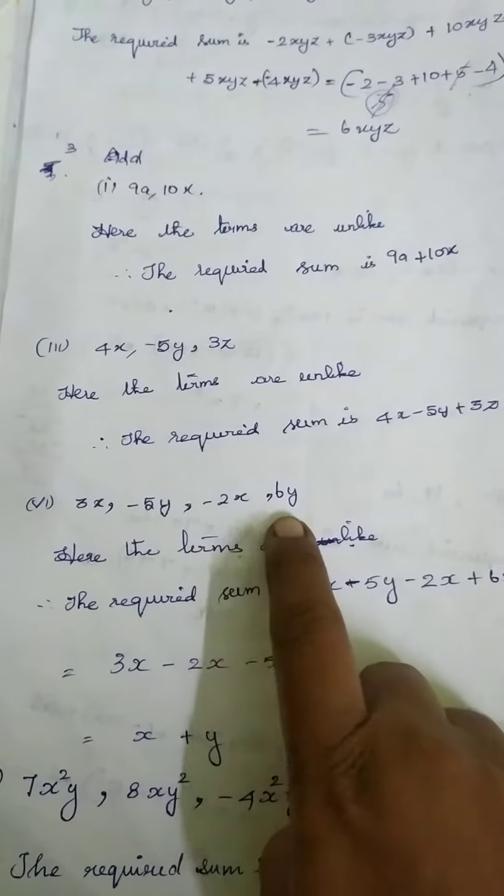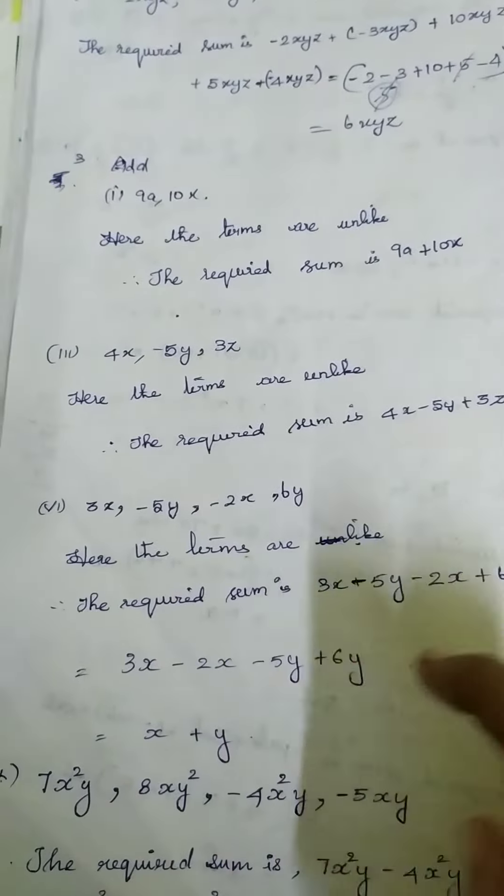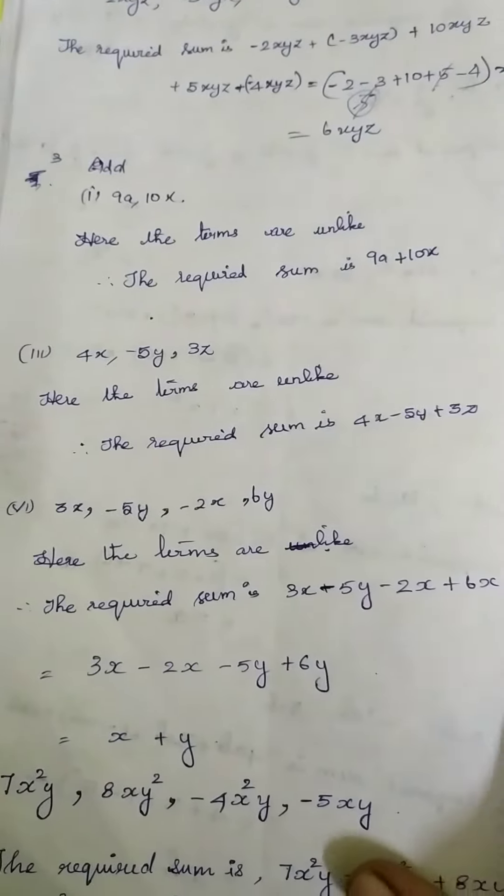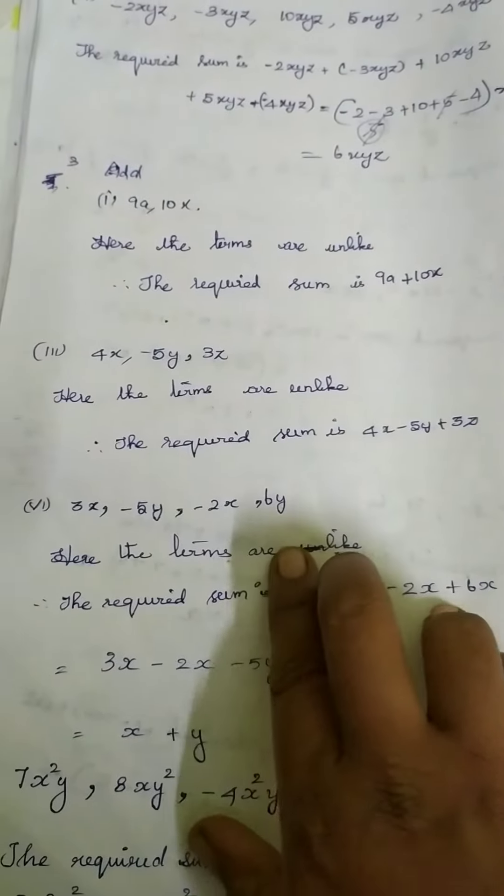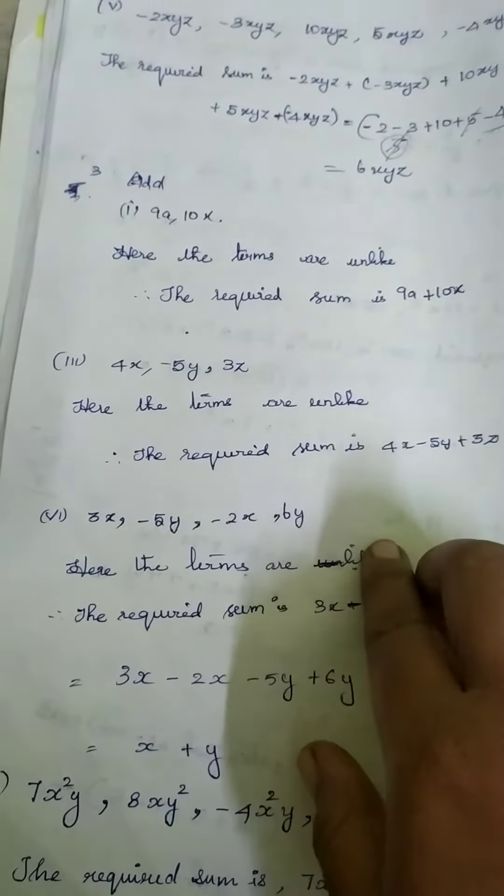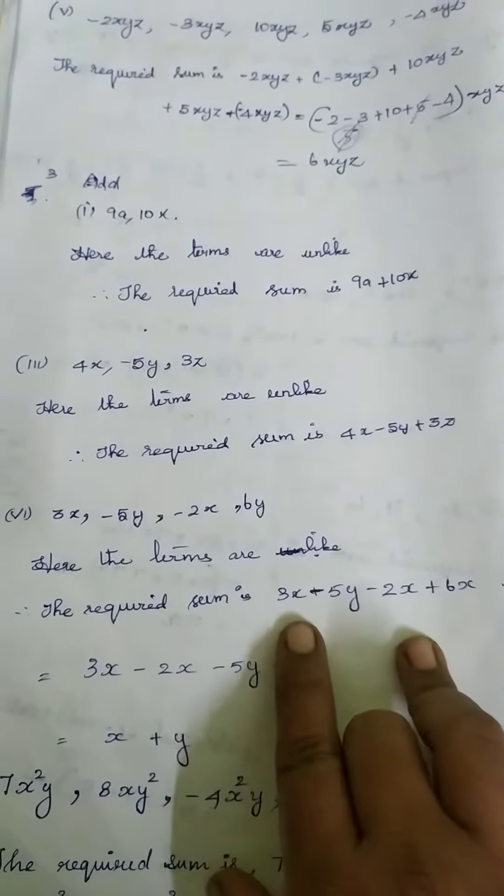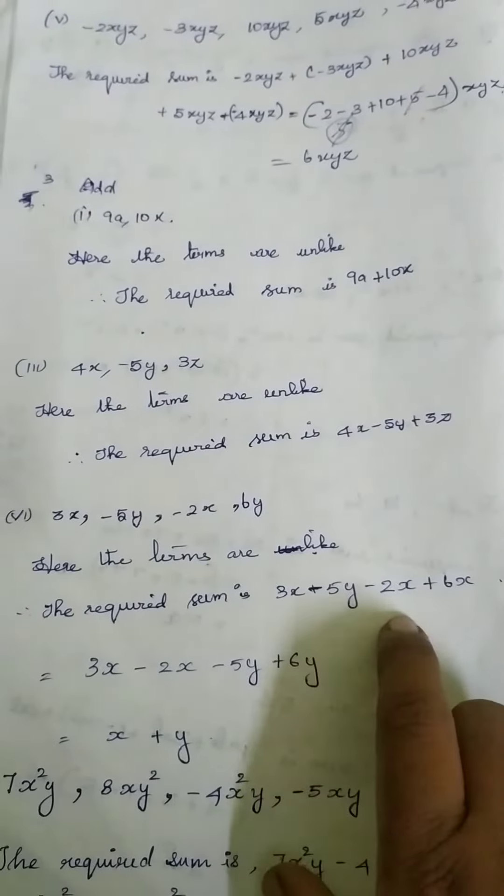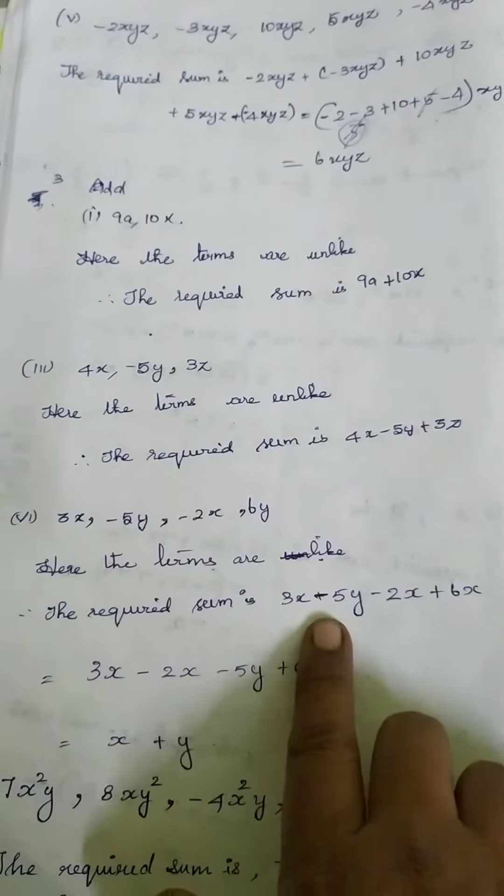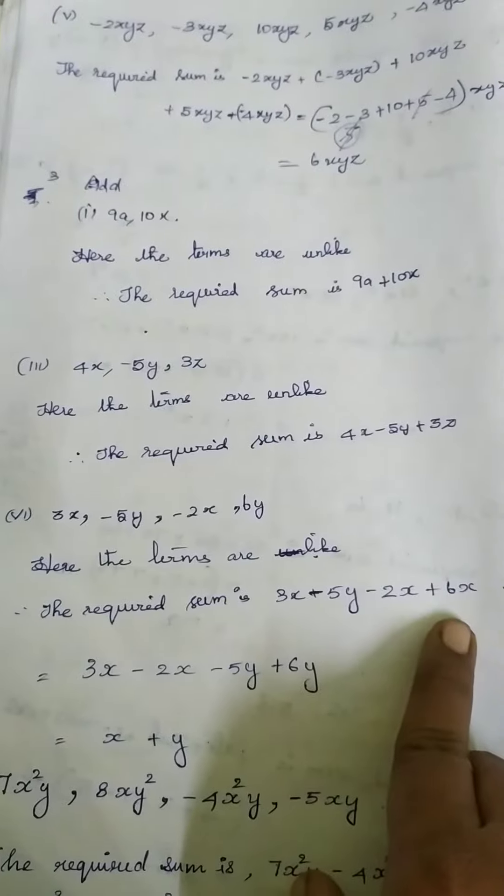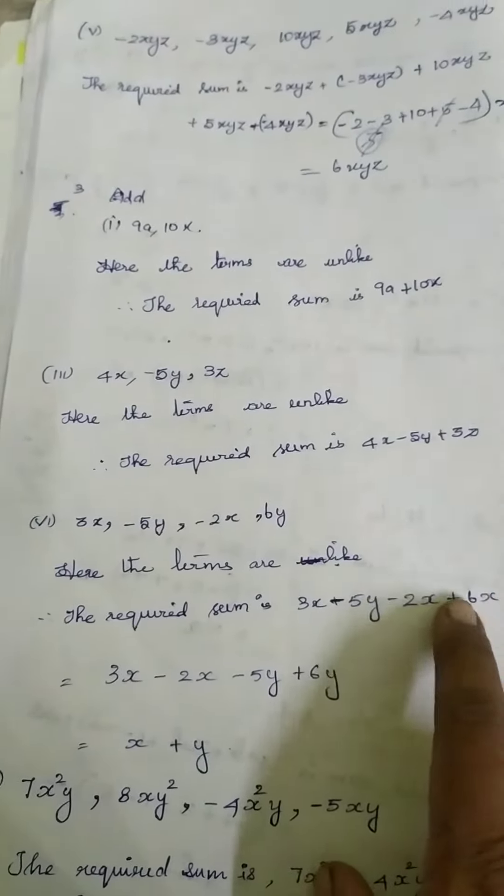Next problem: 3X, minus 5Y, minus 2X, 6Y. If you see here, you have 2 like terms, a pair of like terms. So here the terms are like. You can say the required sum is, first we are using the symbols properly: 3X minus 5Y minus 2X plus 6Y.